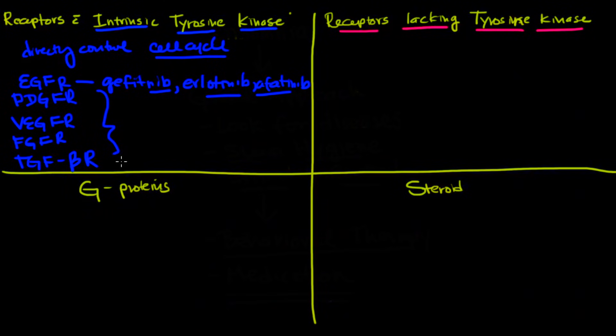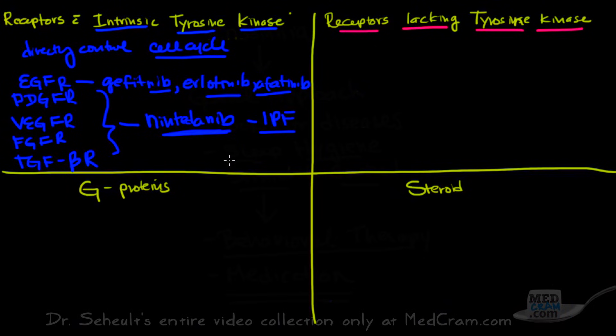Can be blocked by something called nintedanib. And that was FDA approved back in 2014 for the treatment of idiopathic pulmonary fibrosis. So IPF. And it kind of slows down the progression. Again, this is utilizing through a tyrosine kinase receptor blocker.